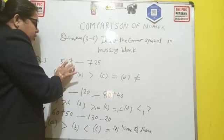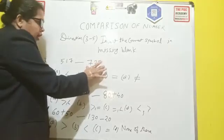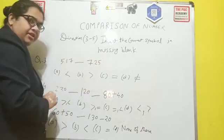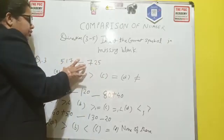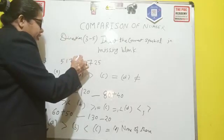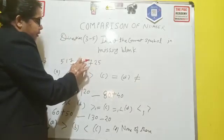So definitely, this is your three digit numbers, 5, 1, 7 and 7, 25. On the 100 position, here is 5 and here is 7. So we can directly compare from the 100 position. So 7 is bigger, definitely 7, 25 is bigger and your opening will be like this.